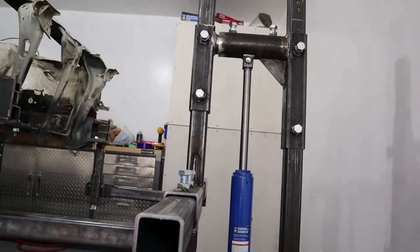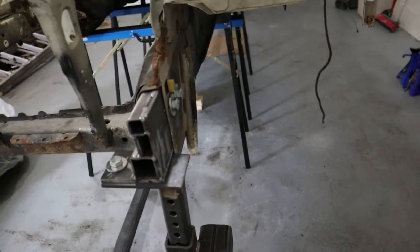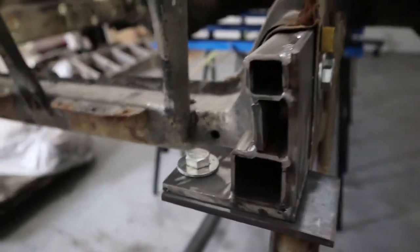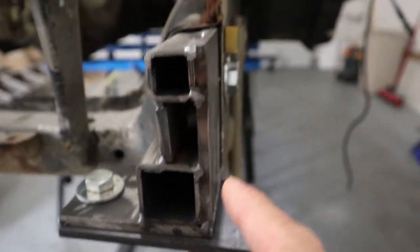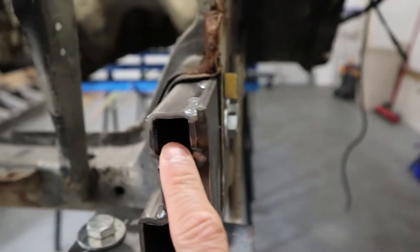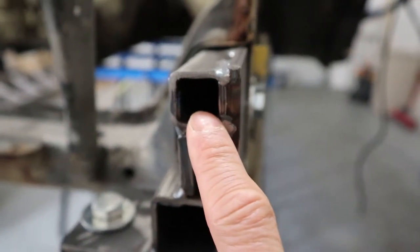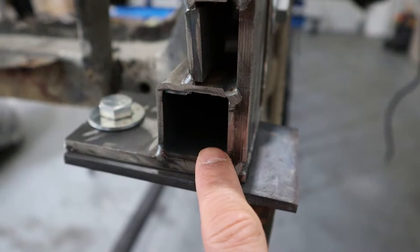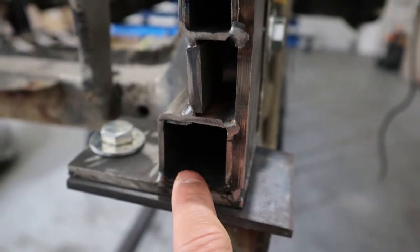This is what I made for my mounts. This piece here is one inch by one inch by one eighth thick, and this piece here is one inch and a half by one inch and a half by one eighth thick.